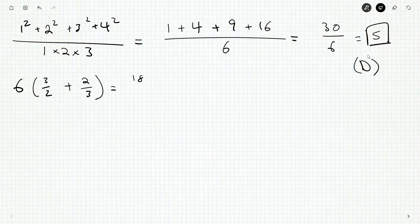You'll get six times three is 18 over two, and six times two is 12 over three. 18 divided by two is nine, 12 divided by three is four. We add these up, and our final answer is 13.